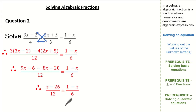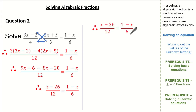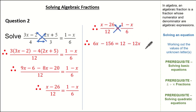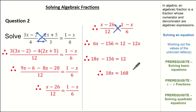We have a denominator of 12 on one side and 6 on the other, so we cross multiply again. Multiplying the 6 by (x minus 26) gives us 6x minus 156, and 12 multiplied by (1 minus x) gives us 12 minus 12x. Collecting all x's on one side: adding 12x gives us 18x minus 156 equals 12. Adding 156 gives us 18x equals 168, so therefore x equals 28 over 3. Notice how this question looks scary but you are just using knowledge on fractions and solving basic equations.